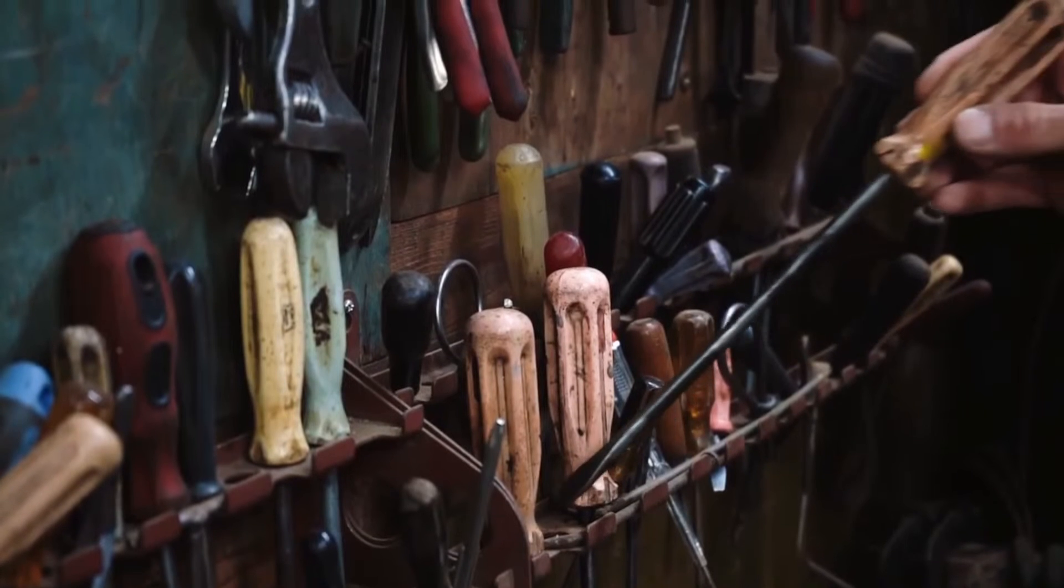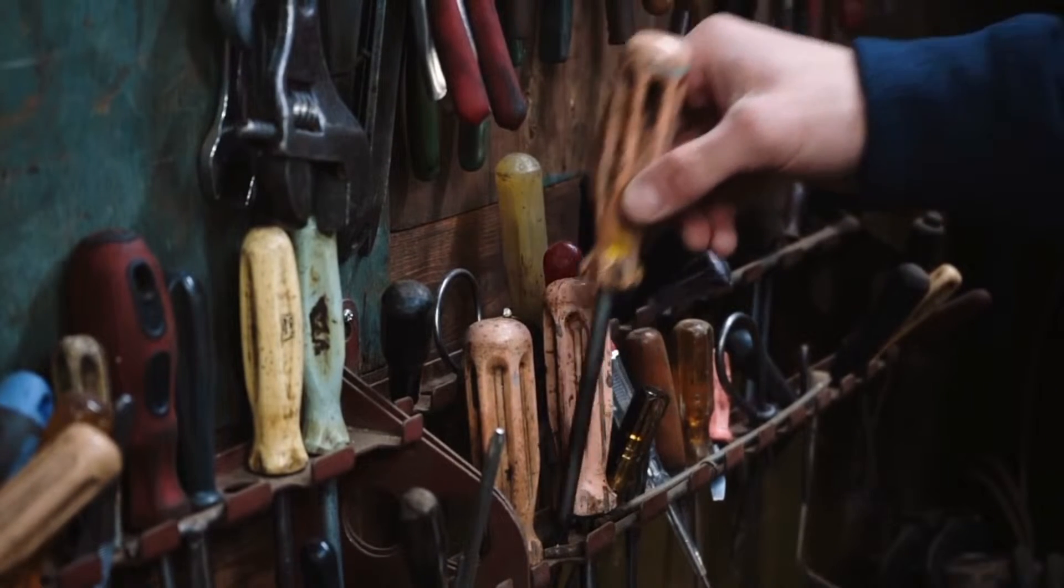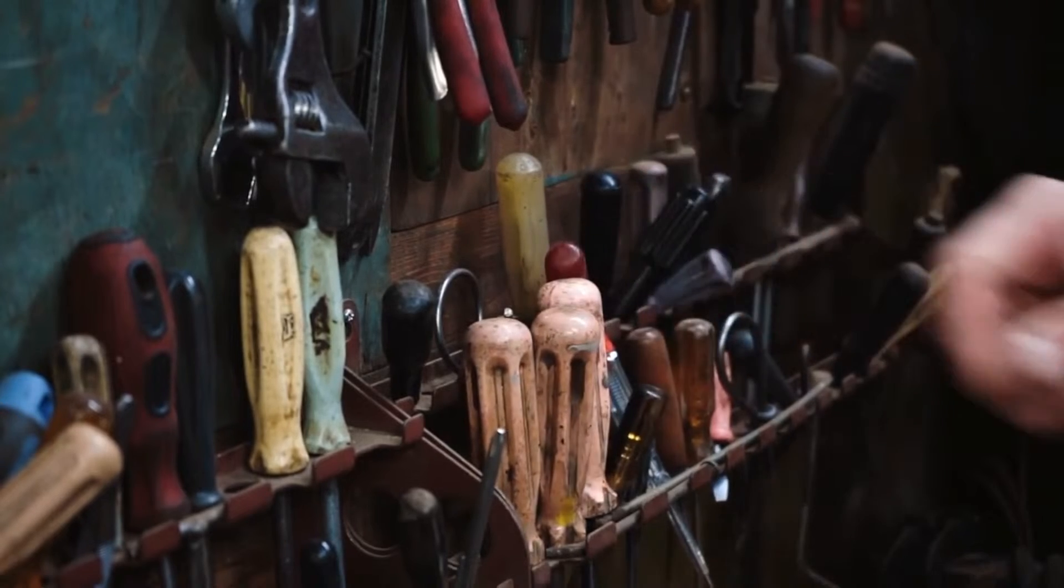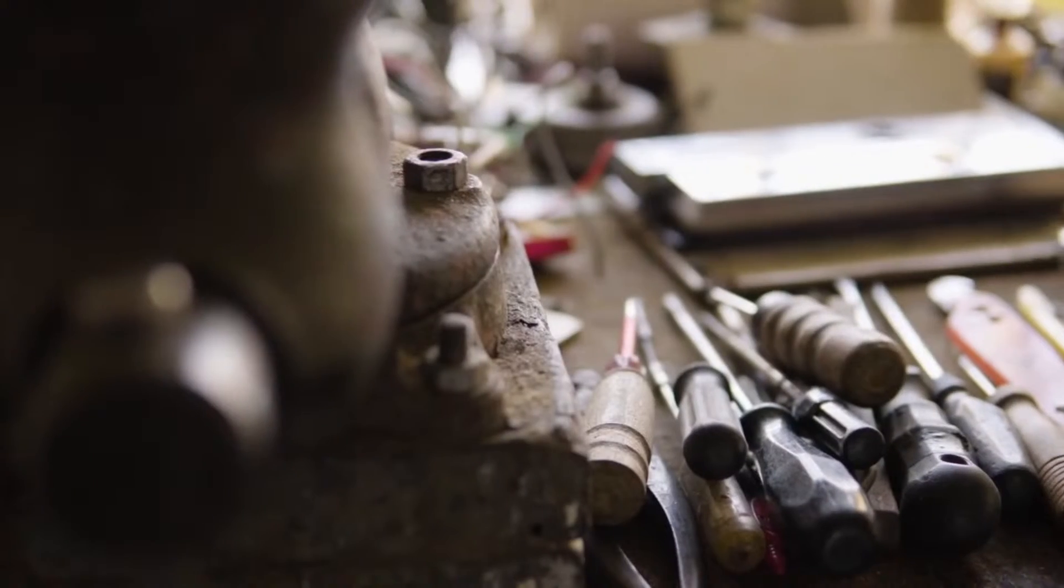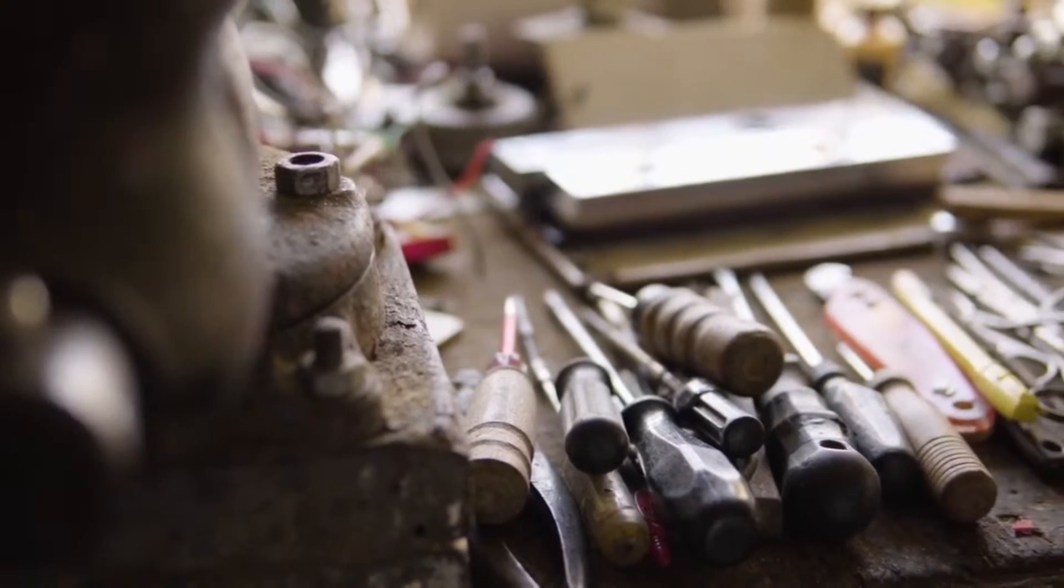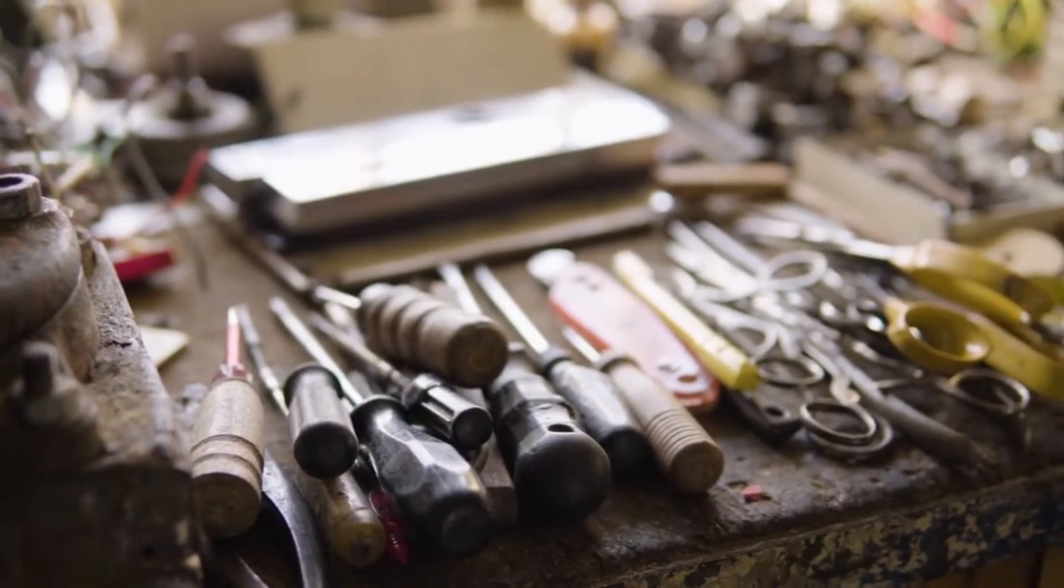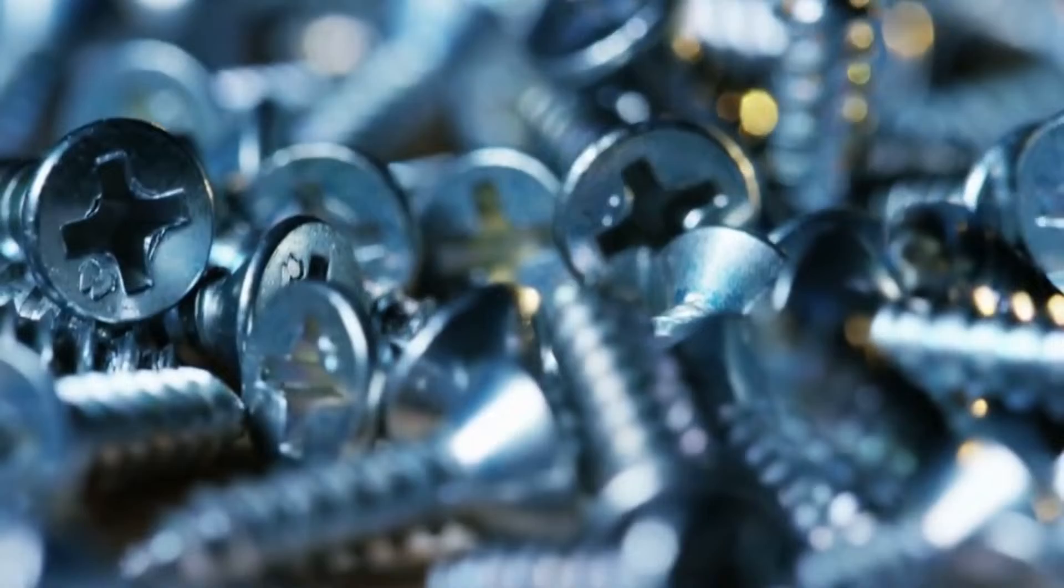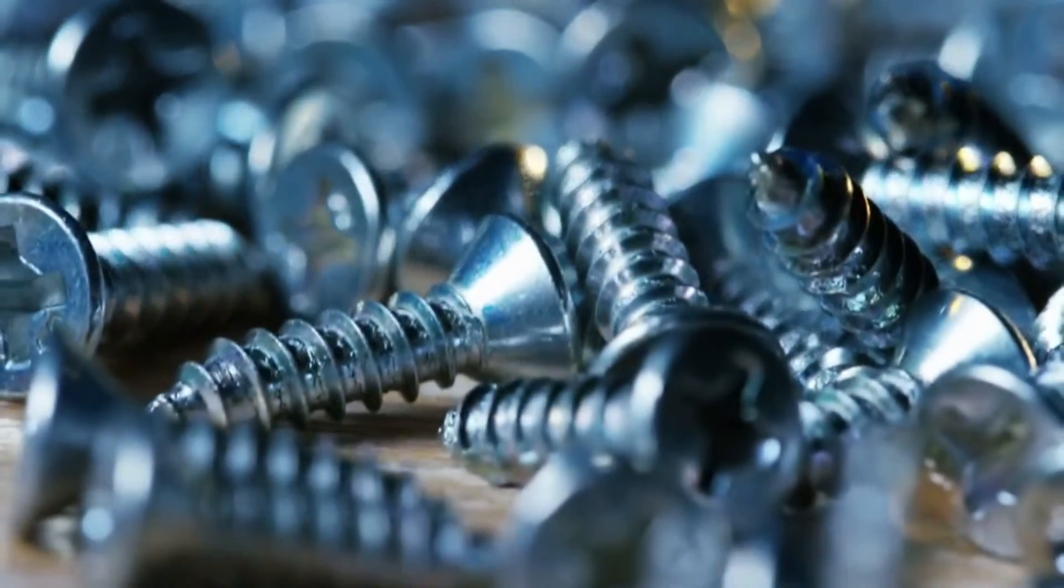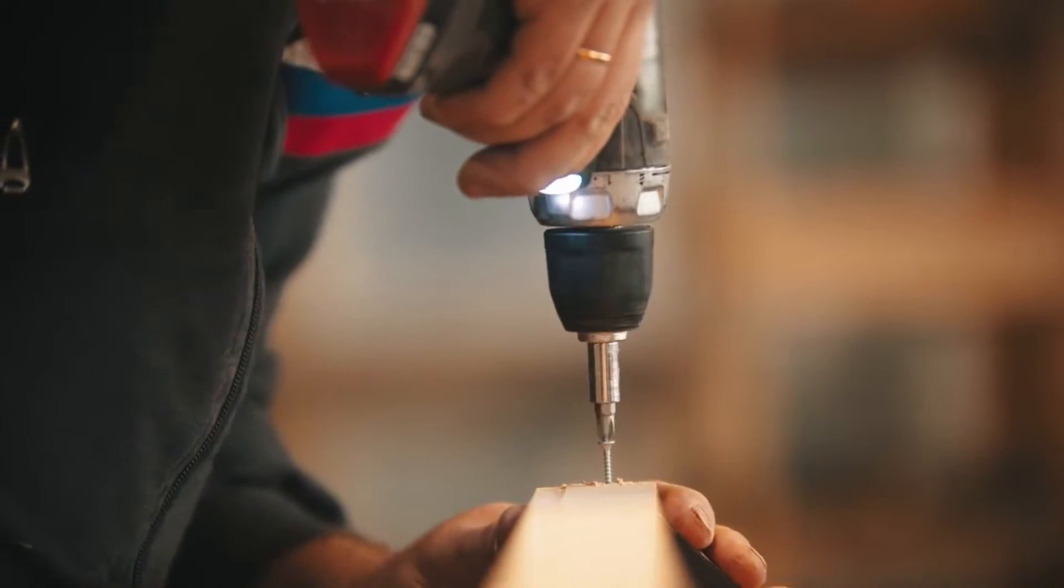The introduction of the Phillips-head screw into the automotive industry was a game-changer. The cross-head design allowed for self-centering of the screw, which meant that it could be driven in more efficiently by assembly line workers. This was particularly important in the fast-paced environment of automobile production, where time and precision were of the essence. The reduced likelihood of cam-out, where the driver slips out of the screw head, meant fewer damaged screws and less wear on tools, leading to cost savings for manufacturers.